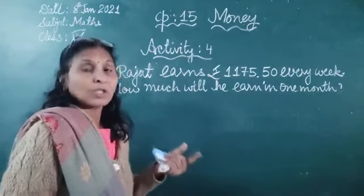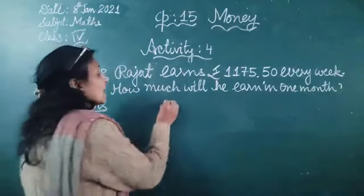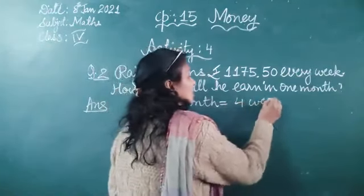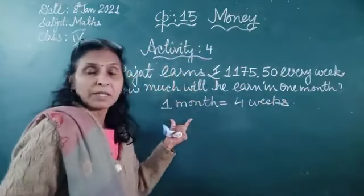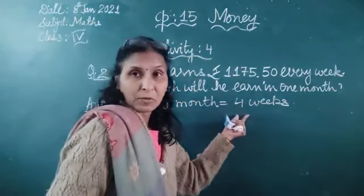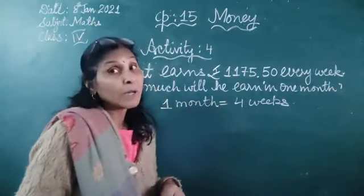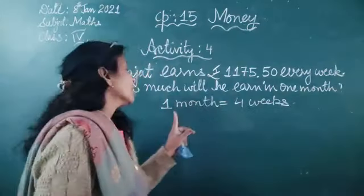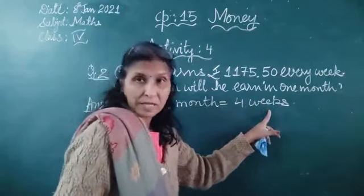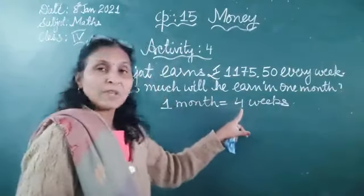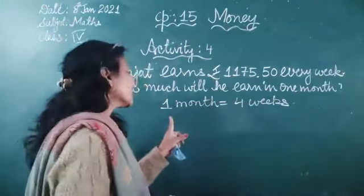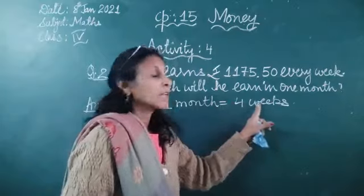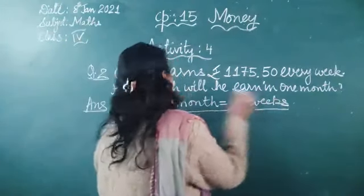We know that one month is equal to four weeks. Sometimes five weeks also come in one month, but in our calculation we take one month as equal to four weeks. You should remember this relation.